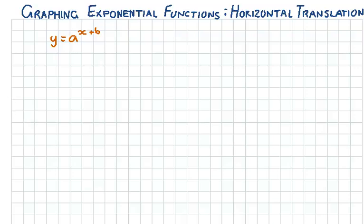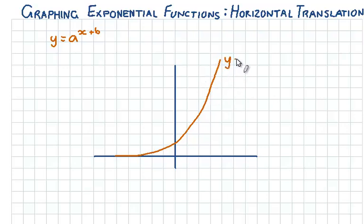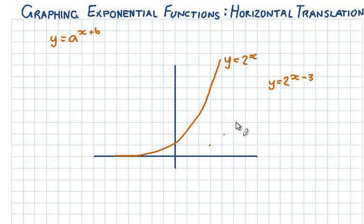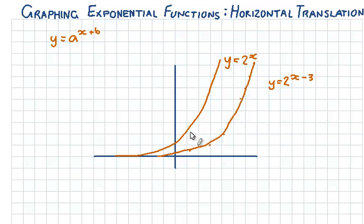Let's sketch that up. So if this is the graph of y equals 2 to the power of x, to draw the graph of y equals 2 to the power of x plus 3, we just have to move every point on this graph 3 units to the left. I'm just tracing them using the grid here, and each of these points has shifted 3 units.